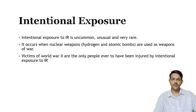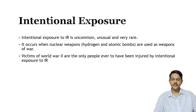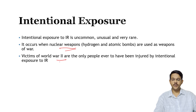Intentional exposure occurs when a person is deliberately exposed to ionizing radiation. This is uncommon since nobody wants to be exposed to radioactive material, but it is seen mainly when people are exposed to nuclear weapons like hydrogen bomb or atomic bomb explosions. A common example is victims of World War II, where people were intentionally exposed to ionizing radiation caused by the explosion of the hydrogen bomb.